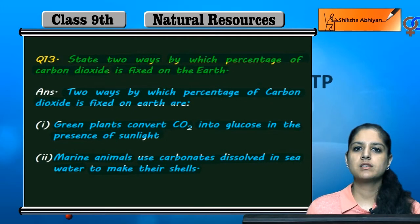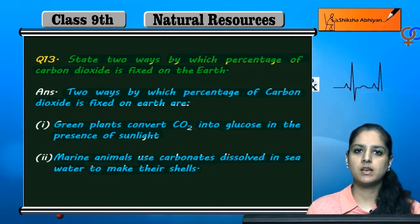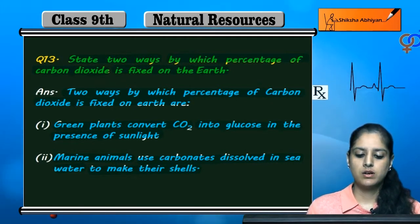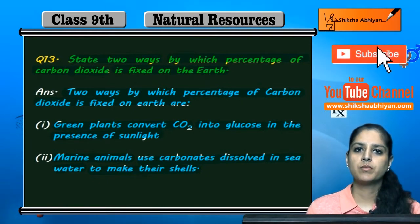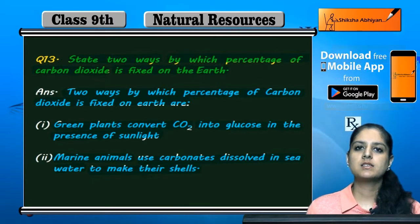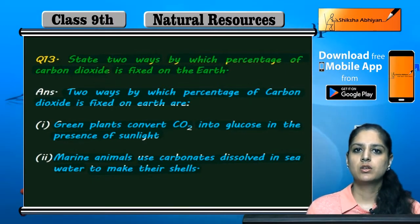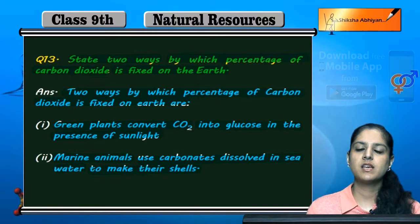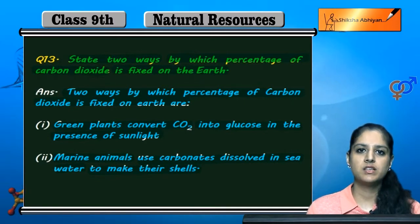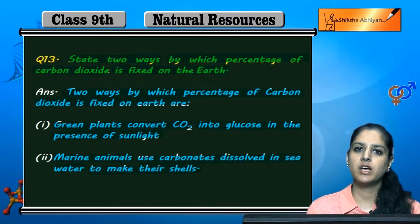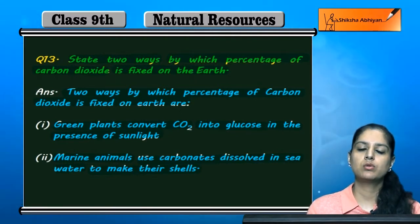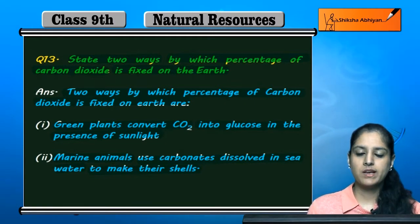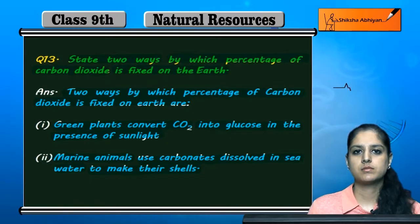So jo carbon dioxide hai woh hum exhale kar rahe hain, lekin baaki jo saare green plants aur marine animals hain woh unko use bhi karte hain, ek tariqe se woh balance banata hai. Agar sirf hum exhale karte jayenge to carbon dioxide ki percentage increase hoti jayegi - us percentage ko manage karne ke liye us carbon dioxide ka kahin aur use hona zaroori hai. So woh use ho rahi hai by green plants and by marine animals. Thank you.